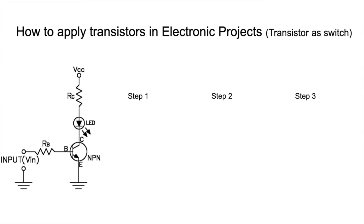Now we'll see how to apply the transistor-as-switch concept to build real-time projects. Here is a basic circuit using a transistor as a switch to turn an LED on and off. Apart from the LED, we can see certain resistors — one is RB connected to the base, and one is RC connected to the collector.